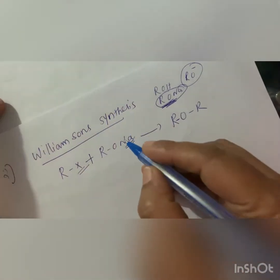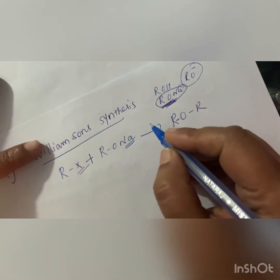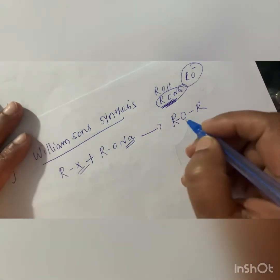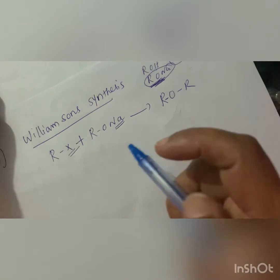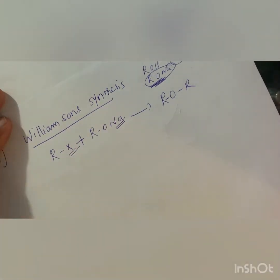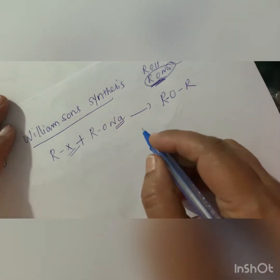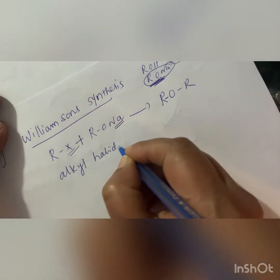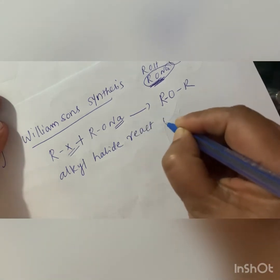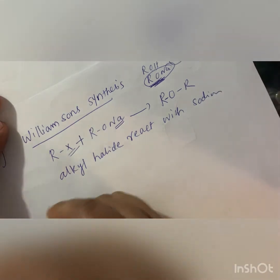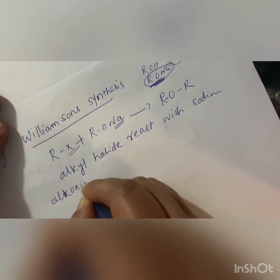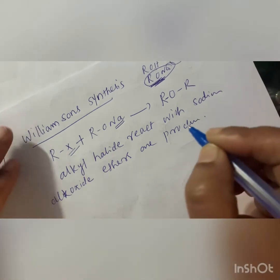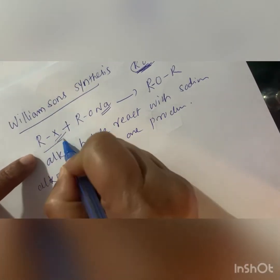Williamson's synthesis is a very important laboratory preparation for ether. Using this method, we can prepare both symmetrical and asymmetrical ethers. When alkyl halide reacts with sodium alkoxide, ethers are produced. This reaction is known as Williamson's synthesis.